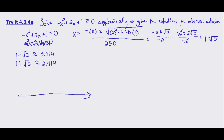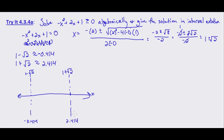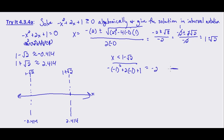We make our intervals on the number line: 1 minus the square root of 2 (approximately negative 0.414) and 1 plus the square root of 2 (approximately 2.414). Testing x less than 1 minus root 2, we use x equals negative 1: negative 1 squared plus 2 times negative 1 plus 1 equals negative 1 minus 2 plus 1 equals negative 2. So that interval is negative.